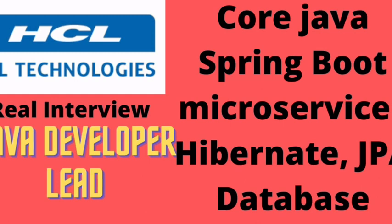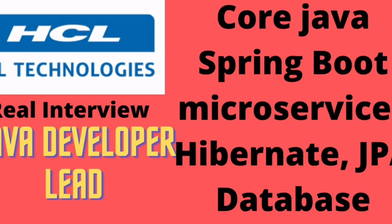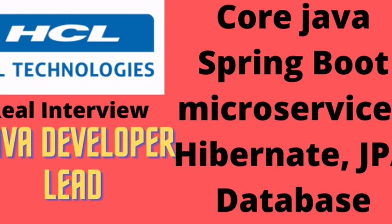Interviewer: In Java 8, what is the Consumer interface? Candidate: Consumer interface is a functional interface. It has one method — it accepts one argument, and on that argument if you want to perform any operation you can perform it, and it returns void. Interviewer: What is the double colon operator? Candidate: The double colon operator is a method reference operator introduced in Java 8. When we want to perform any operation in the functional interface method, we can use that double colon operator.